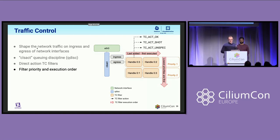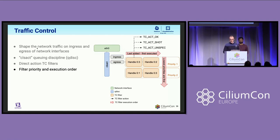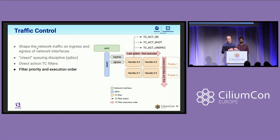The priority is used to define the order of execution of different filters. The lowest priority is actually going to be executed first. And at a given priority level, the program that was loaded last is the first one to be triggered.